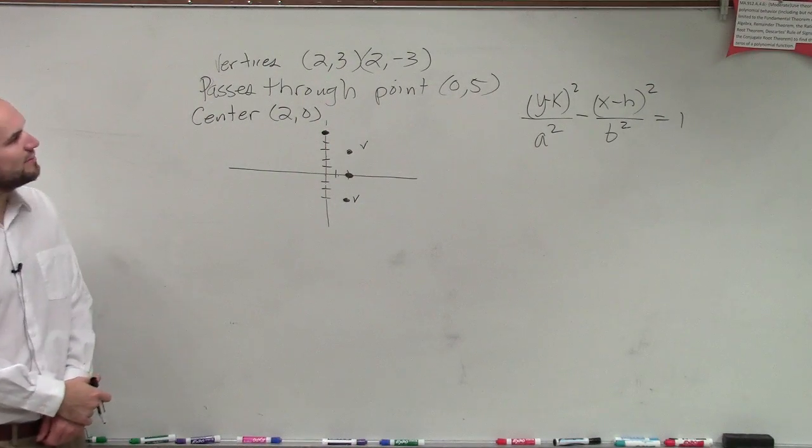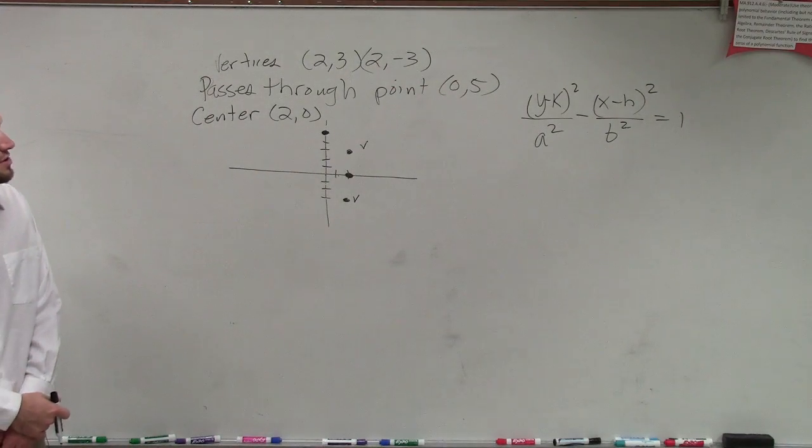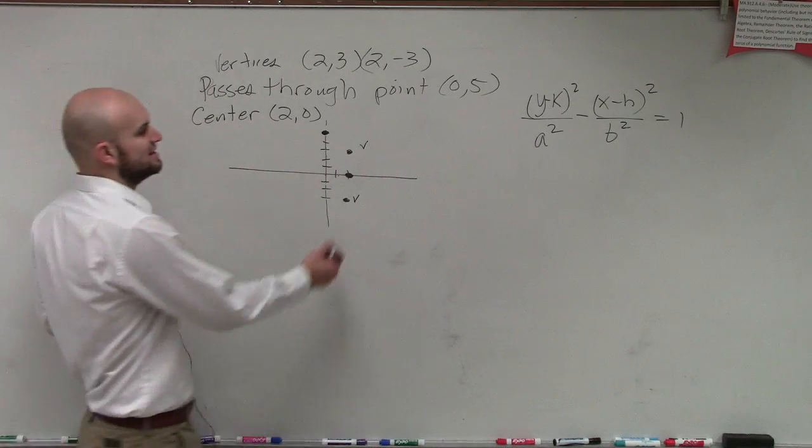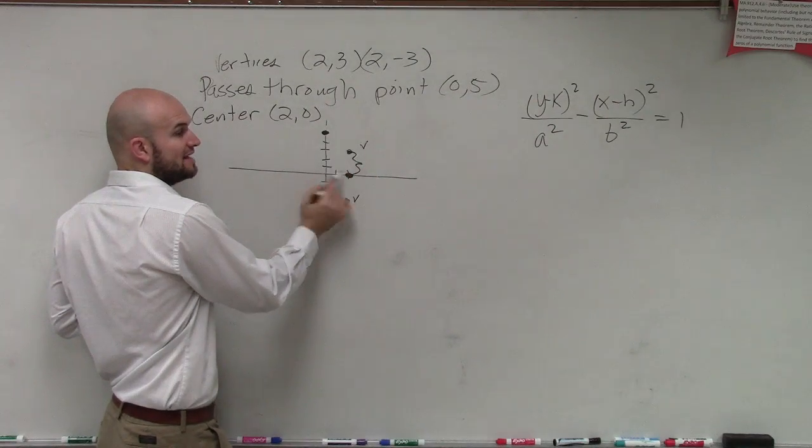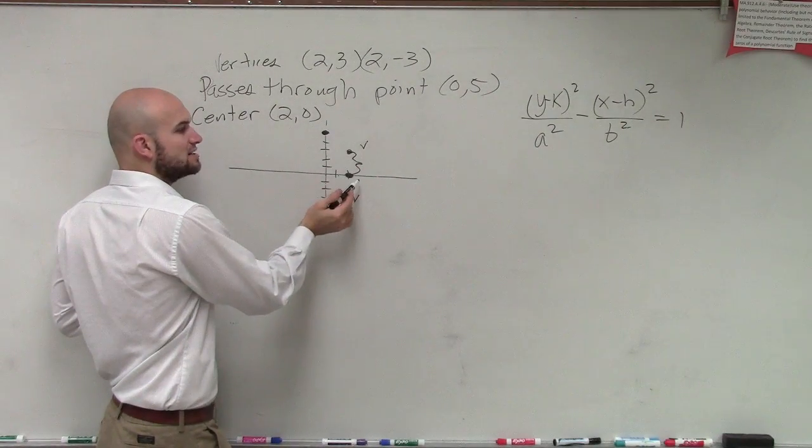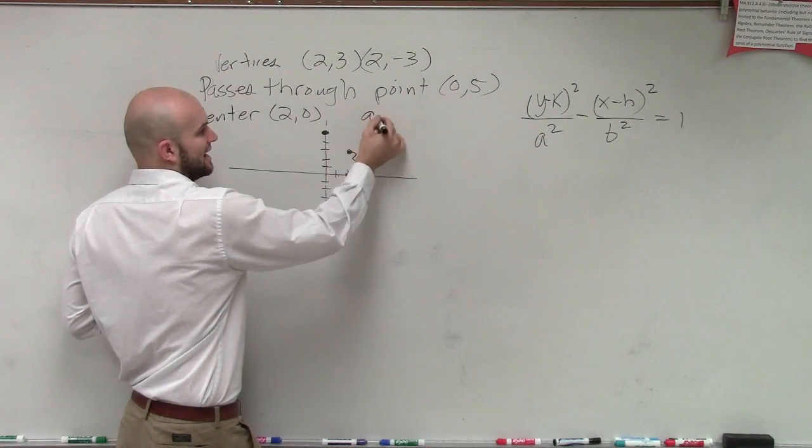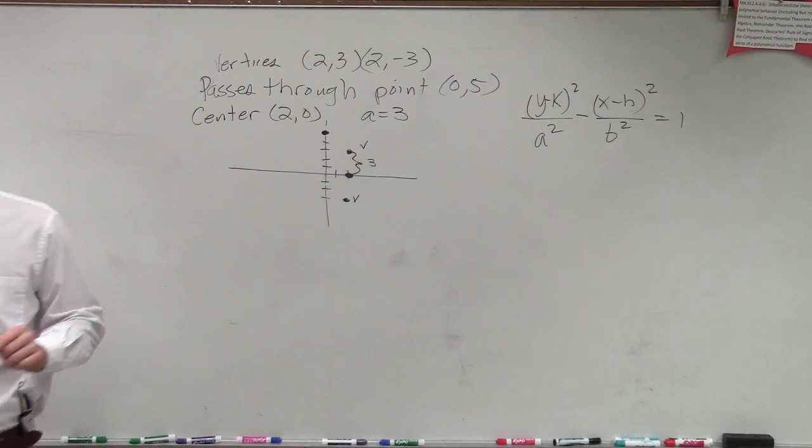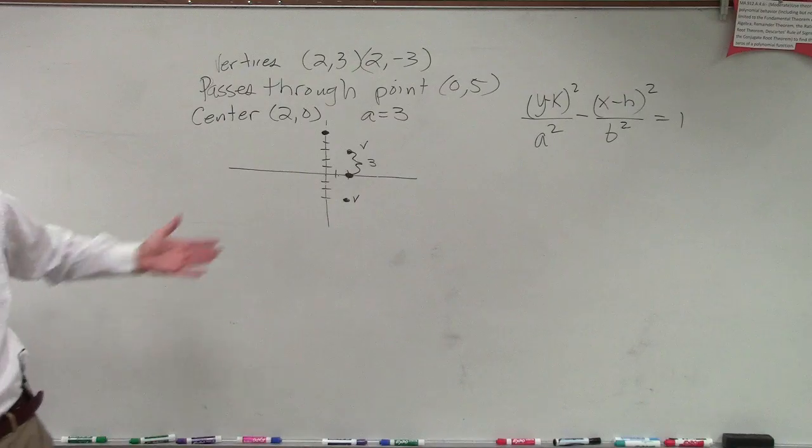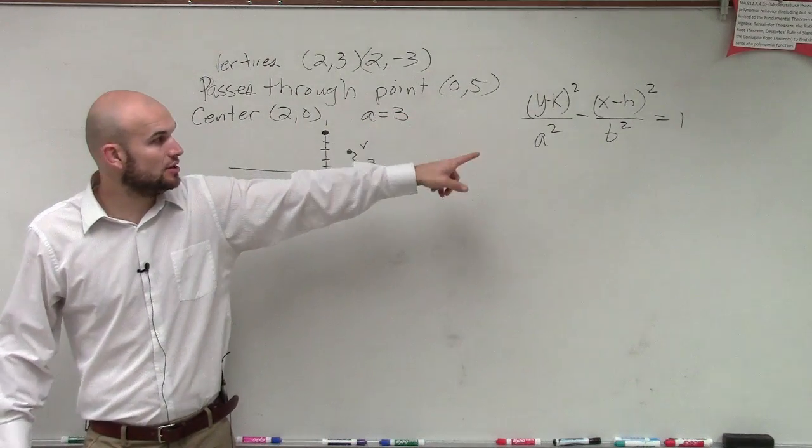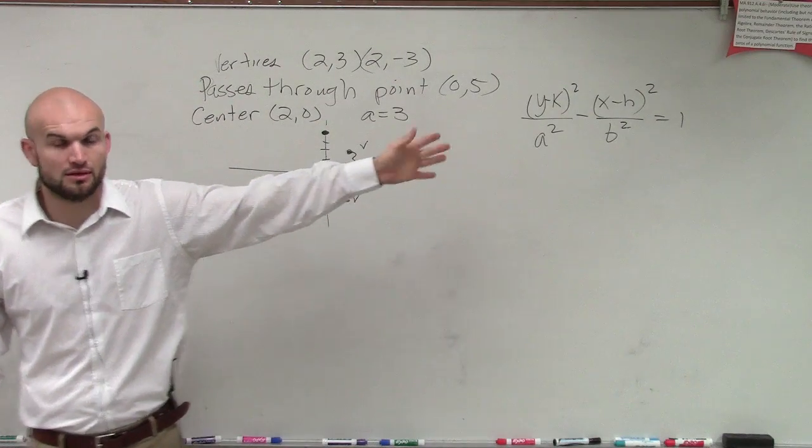So now we look at our information and we say alright, let's just plug in what we know and see what we can solve. If I know that the distance, we know that a is the distance from the vertices to the center. So a is going to be a distance of 3. So we can say a equals 3. Do we know what b is yet? No. We need to figure out b. We know what k is, we know what h is, we know what a is, but we don't know what b is.